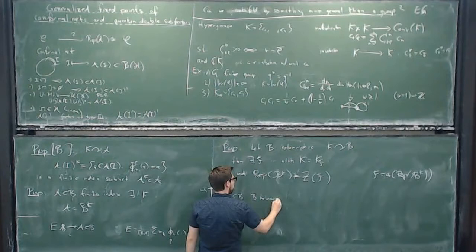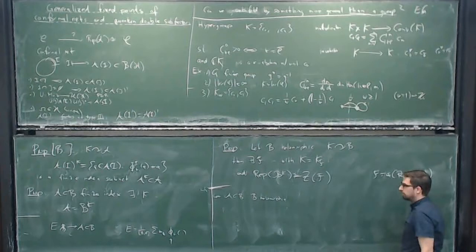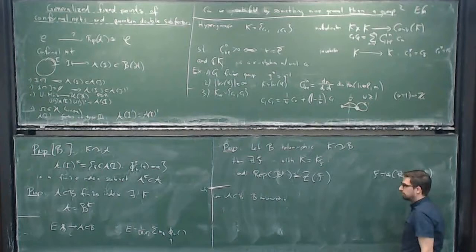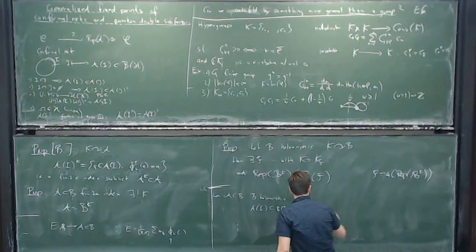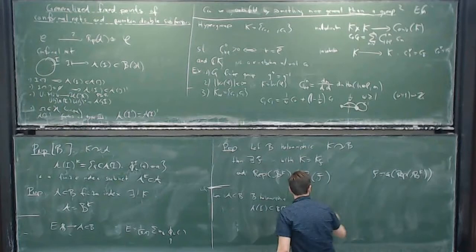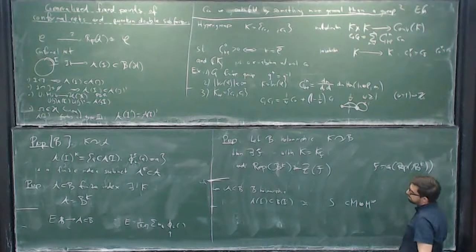To prove this, you basically just need that the hypergroup decomposition is unique. And the other observation: inside B holomorphic — this is a lemma which follows from work of Kawagashi from 2000, together with some results of Davydov, Müger, and my paper with Kawagashi and Longo — the inclusion of A(I) inside B(I) is conjugated to a Longo-Rehren subfactor M ⊗ M^op of F, which is the dual of what other people study, and it's exactly the one associated with this F.